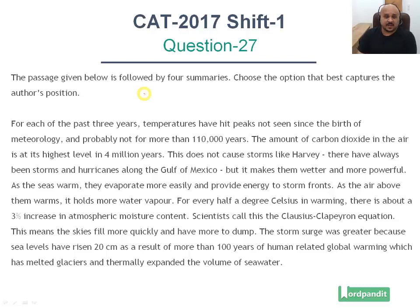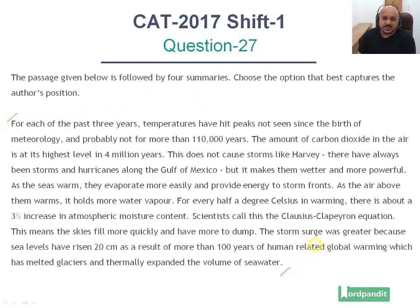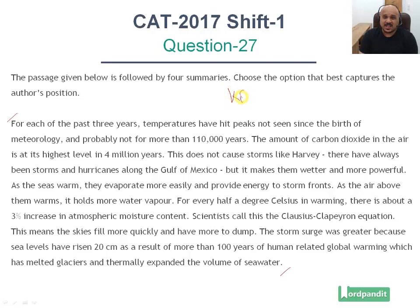What do paragraph summary questions consist of? Very simply, one paragraph followed by four options. You need to identify the option which is the best summary for this paragraph. The main idea, the main point, the central theme — the central point of the paragraph is the key. That is what you need to identify.